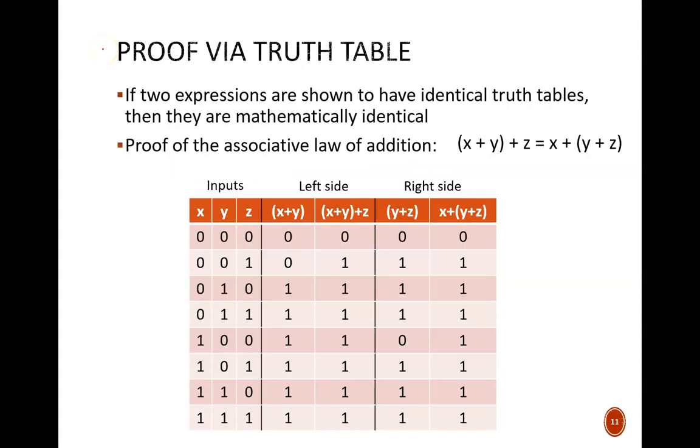There are a couple of ways we can prove these laws. An approach that can be done in Boolean algebra, but not in numeric algebra, is proof via truth tables. Recall that a truth table requires writing the output for every possible input combination. If two expressions are shown to have the same output for every possible input combination, then they are equivalent. In other words, this equation will be true if the left side and the right side have the exact same output column in the truth table.